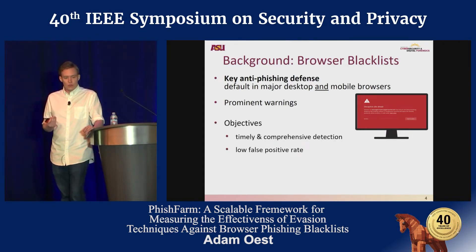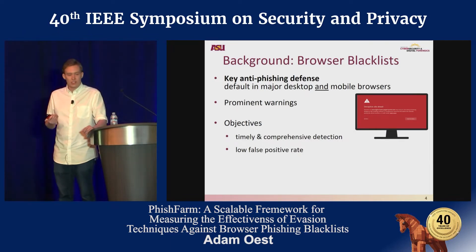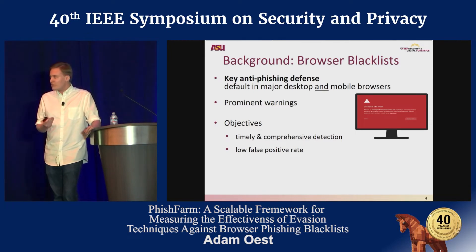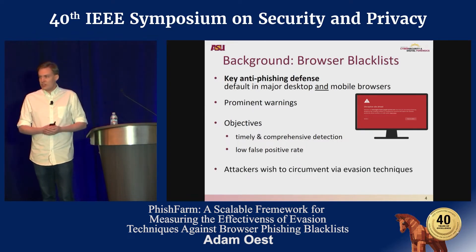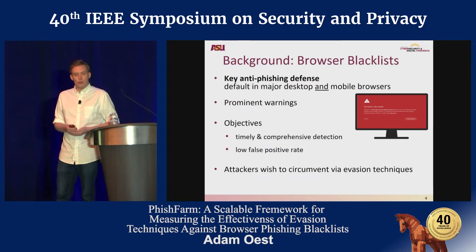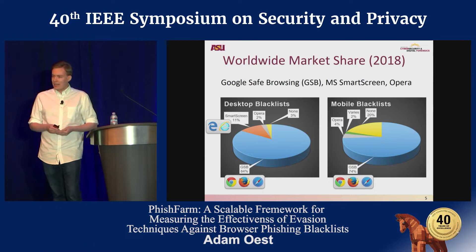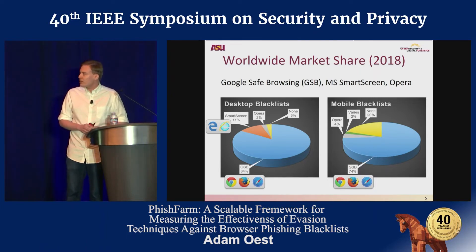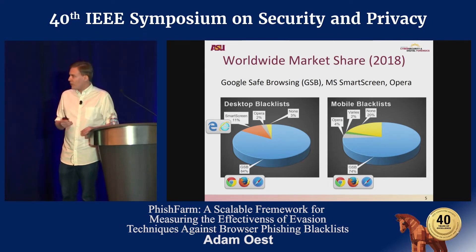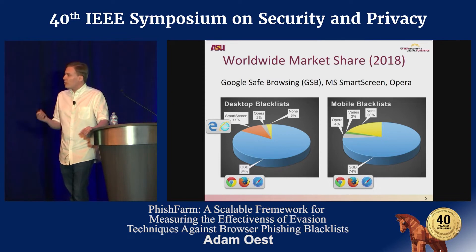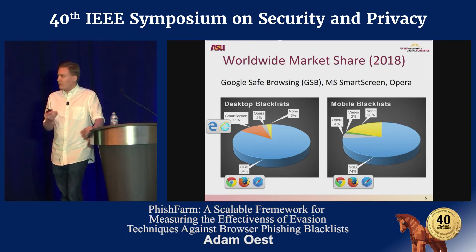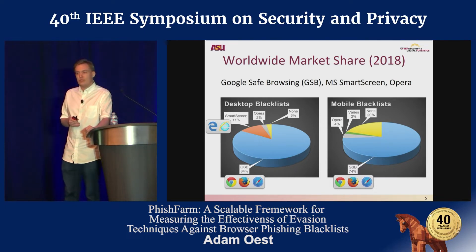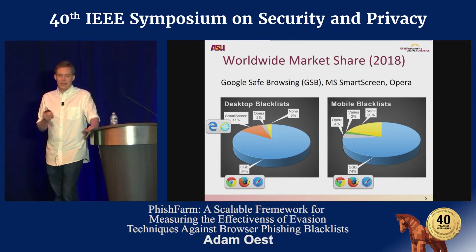The objectives of blacklists are twofold: first, we want timely and comprehensive detection and blocking of malicious websites, and we also want a low false positive rate so that legitimate websites don't get disrupted. It is in the interest of attackers to circumvent these blacklists. Google Safe Browsing protects Chrome, Firefox, and Safari and has a significant majority of the market share on desktop and mobile. Microsoft SmartScreen protects Windows, Internet Explorer, and Edge. The Opera blacklist protects the Opera browser, and there are still some browsers like Android browser that don't have this protection, though that gap is narrowing.